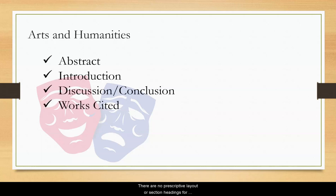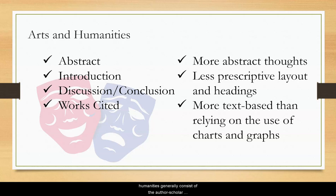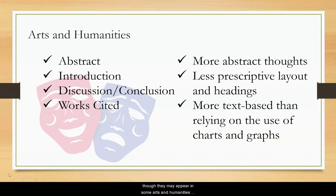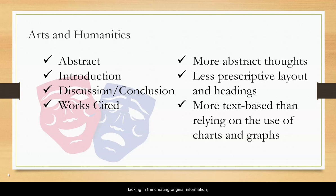There are no prescriptive layouts or section headings for arts and humanities articles like in the sciences, but like any academic paper, it follows a certain format and order as you can see here. Articles in the arts and humanities generally consist of the author-scholar providing an analysis of an issue supported by references or, in contrast, to another scholar's work. The use of charts and graphs is usually not needed, though they may appear in some arts and humanities articles as well as photos or images. Arts and humanities scholars work with thoughts and information in a more abstract manner.